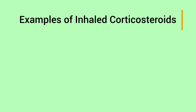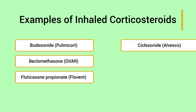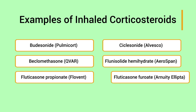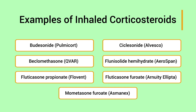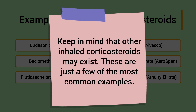Using brand names because they're much easier to pronounce, you have Pulmicort, QVAR, Flovent, Alvesco, AeroBid, Arnuity Ellipta, and Asmanex. Keep in mind that other inhaled corticosteroids may exist — these are just a few of the most common examples.